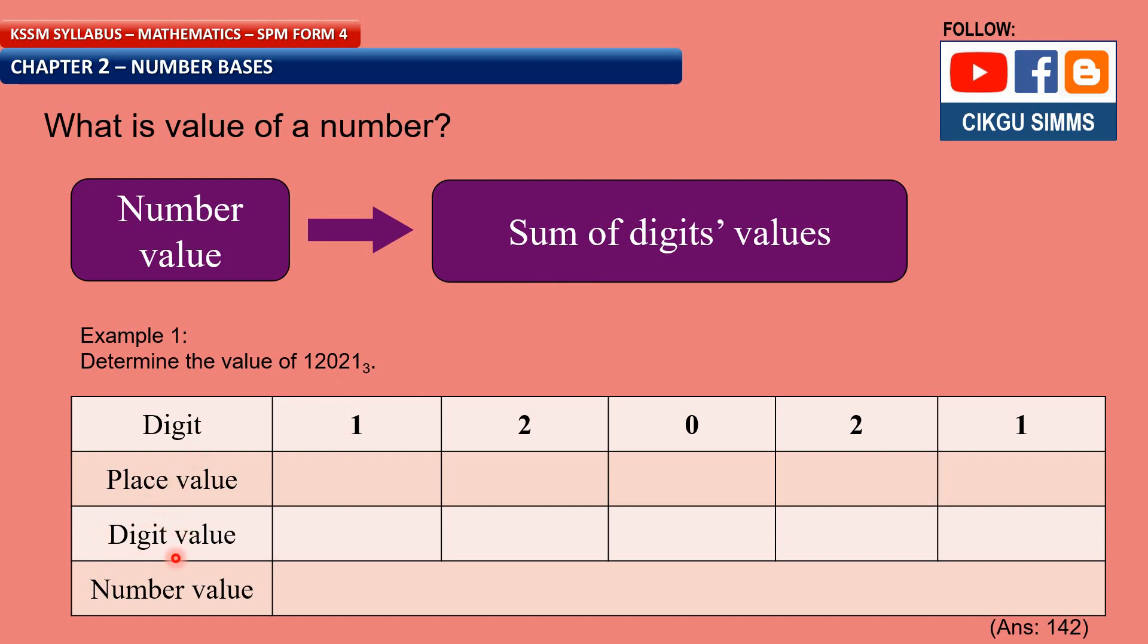Before this you find the digit value, right? You find the digit value for 1, you find the digit value for this one. And all of this, if you add all of this value, you will find the number value of this number. So let us do this example.